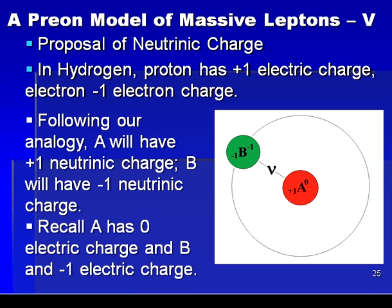Lastly, by having the A and B particles be either both fermions or both bosons, the total spin of the leptons can be arranged to be half-integer, since the bound neutrino is itself a half-integer spin particle. Hence, all quantum numbers of the leptons are obtained in a model that readily allows for three generations of leptons.